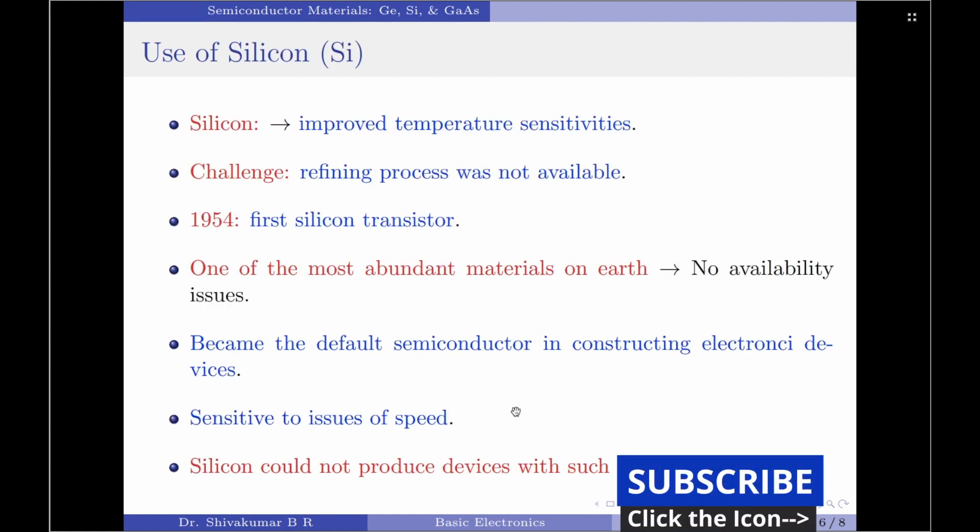It was at this time scientists found that silicon semiconductor had improved temperature sensitivities. But once again, there was a challenge. It was the refining process for manufacturing silicon of very high levels of purity was not available in those days.